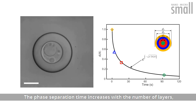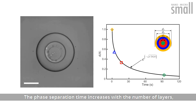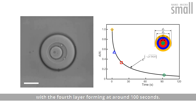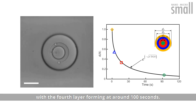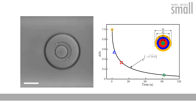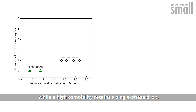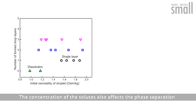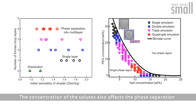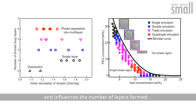The phase separation time increases with the number of layers, with the fourth layer forming at around 100 seconds. At a low osmolality, the droplet dissolves, while a high osmolality retains a single-phase drop. The concentration of the solutes also affects the phase separation and influences the number of layers formed.